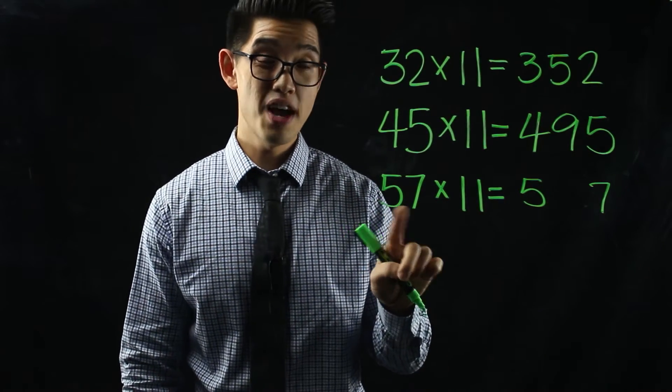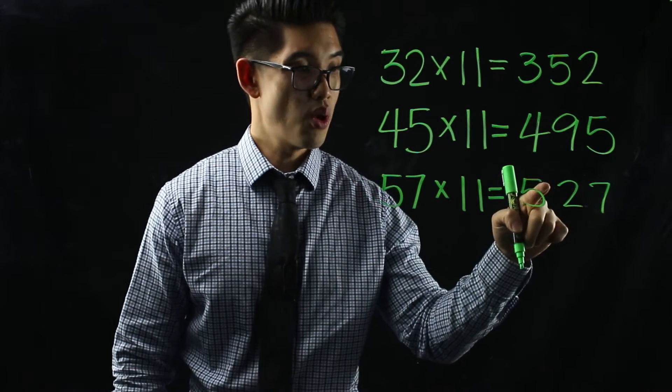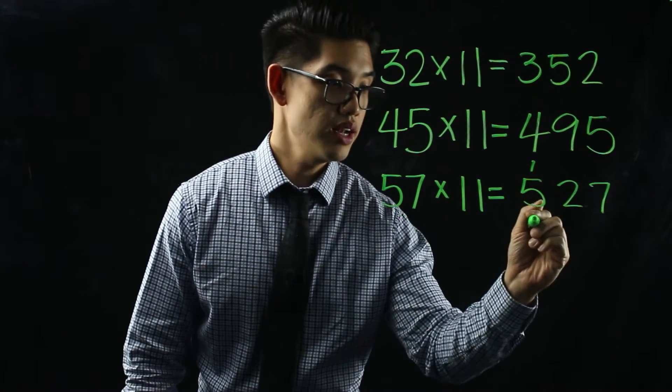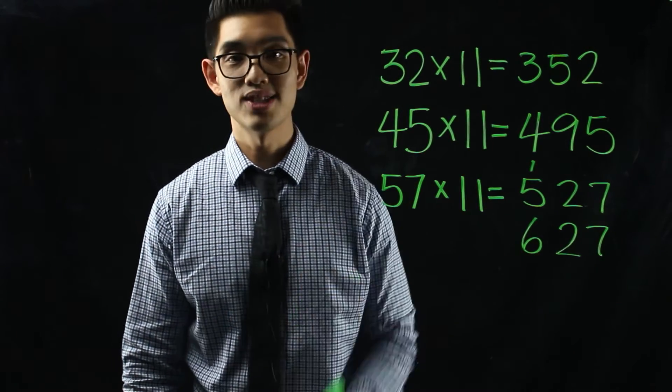However, if I add five plus seven, that's 12. I can't put the one right here. Instead, I have to put the one on top of the five, so then I can write down six. 627 is the answer.